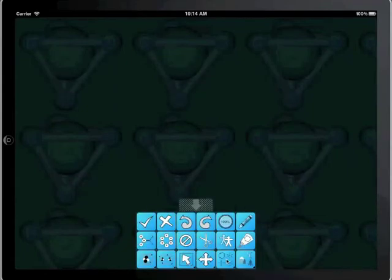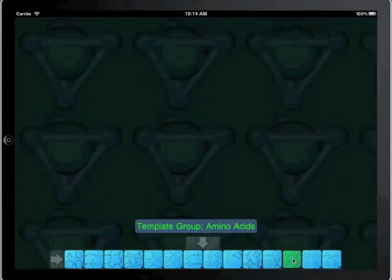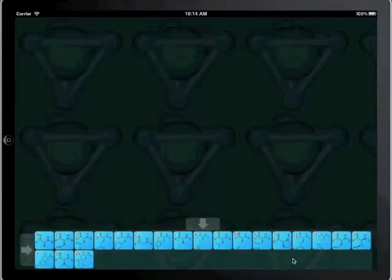First of all, open up the template menu and locate the peptides amino acid subgroup. As you can see, each of the naturally occurring amino acids are listed along with their single-letter code.